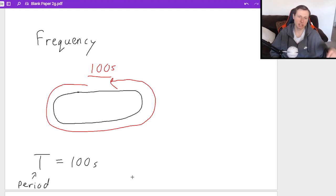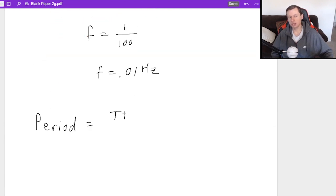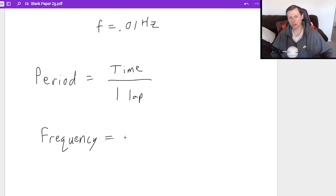The period is the time it takes to complete one of these revolutions, oscillations, rotations, lap, whatever you want to call it. And if you want to find the frequency, it's simply one over the period. So in my example here, my frequency is one over 100 seconds. That would be a frequency of 0.01 hertz. So another way you can think of frequency is it's the opposite of period, where if period is the time to complete one lap, or one rotation, or one revolution, or whatever, then your frequency could be described as the number of laps per one second.